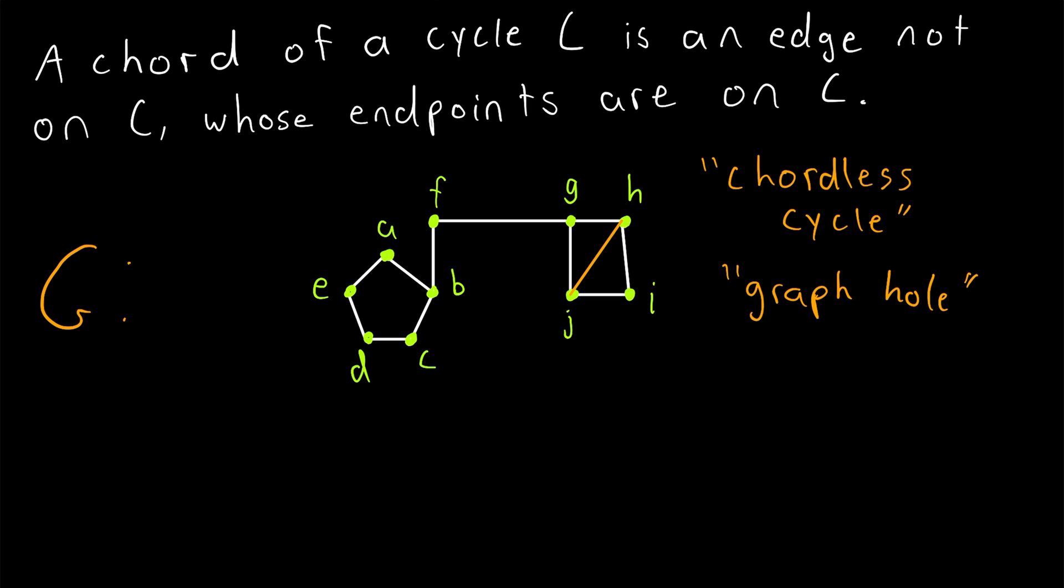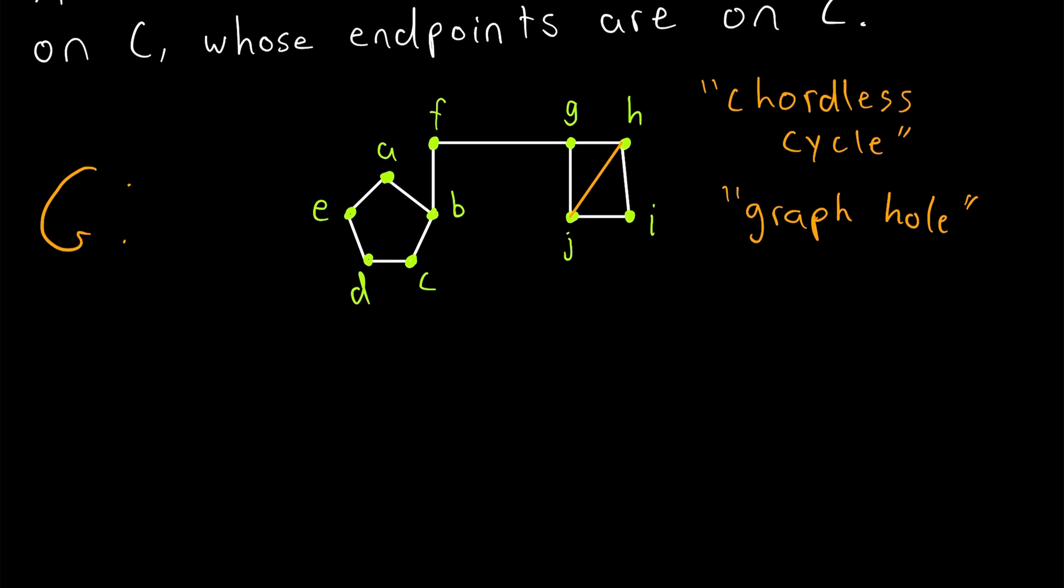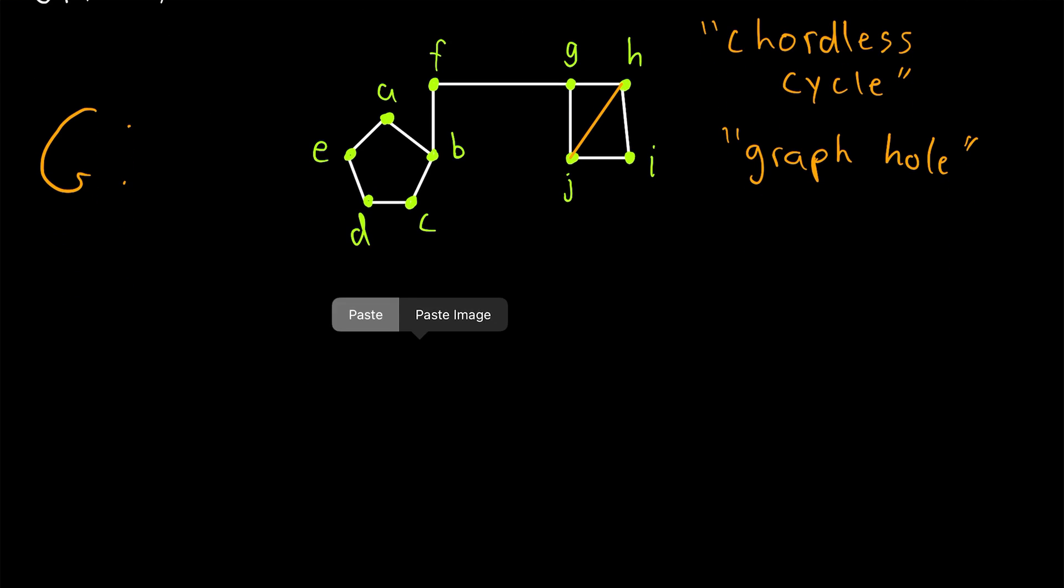One last thing I want to mention in this lesson. Consider the subgraph of G induced by the vertex set of this cycle. That's the subgraph that contains the vertices of that cycle with their adjoining edges, which is this subgraph here.